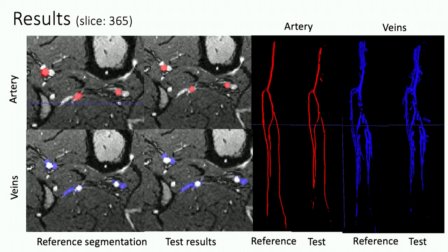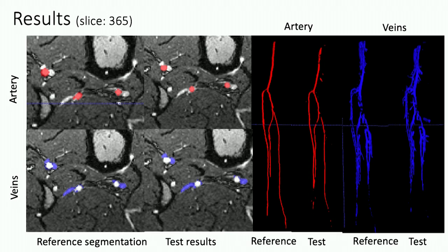Looking at results from the test dataset given by the host, this test sample contains 365 slices. When we view the results in axial slices, the segmentation results for both artery and veins look pretty decent. Viewing them in 3D, there are still some missing chunks, which indicate there might be some uncertainty in the model that may require more data to address.